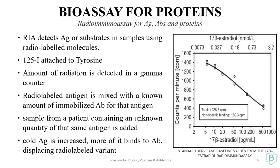The radio immunoassay is another assay for proteins, working on the same principle of antigen-antibody complexing. Here, protein antigens are radiolabeled with iodine-125 — specifically the tyrosine residues in the protein antigen. The surface is immobilized with antibodies and allowed to saturate with the radiolabeled protein antigen. These radiolabeled antigens, also called hot antigens, give a specific amount of radiation measured in counts per minute. You then flood your antigen-antibody complex with a cold antigen which is not radiolabeled.